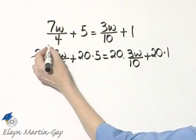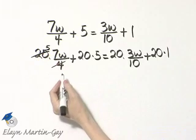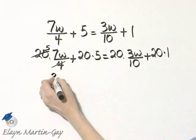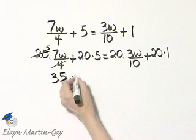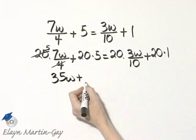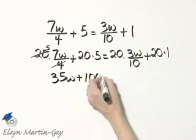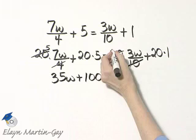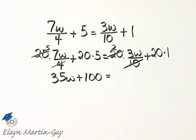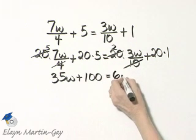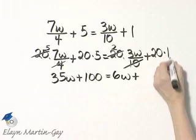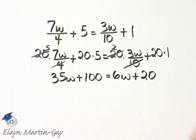4 divides into 20 5 times and I have 5 times 7w or 35w plus 20 times 5, that's 100, is equal to, 10 divides into 20 2 times, and you have 2 times 3w or 6w plus 20 times 1 is 20.